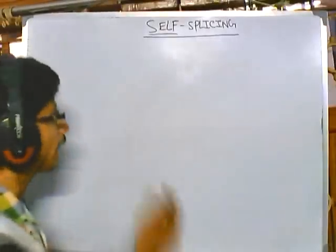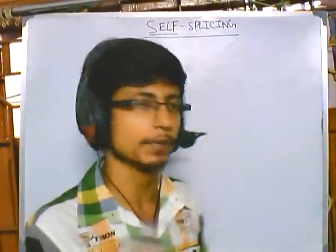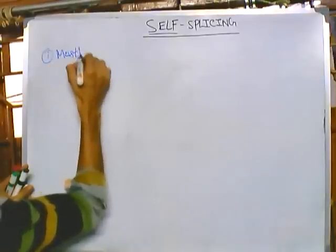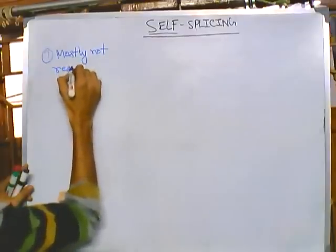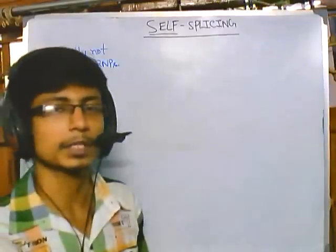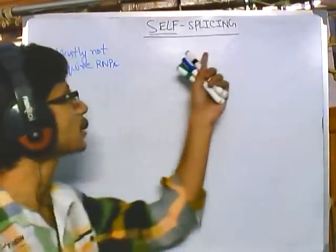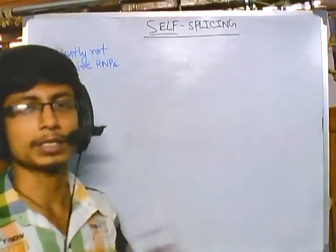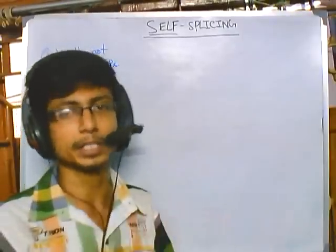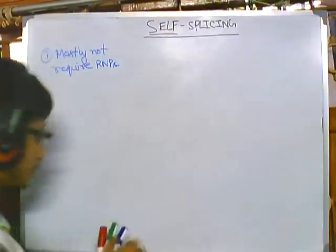Let us look at the properties of self-splicing. First, it mostly does not require any RNPs (ribonucleoproteins). However, sometimes small protein molecules are needed to mask the negative charge of the RNA, because self-splicing involves RNA-RNA interaction. Since the RNA backbone is made up of phosphates, it is negatively charged and tends to repel itself, which is why small proteins are sometimes needed to mask this negatively charged phosphate backbone.